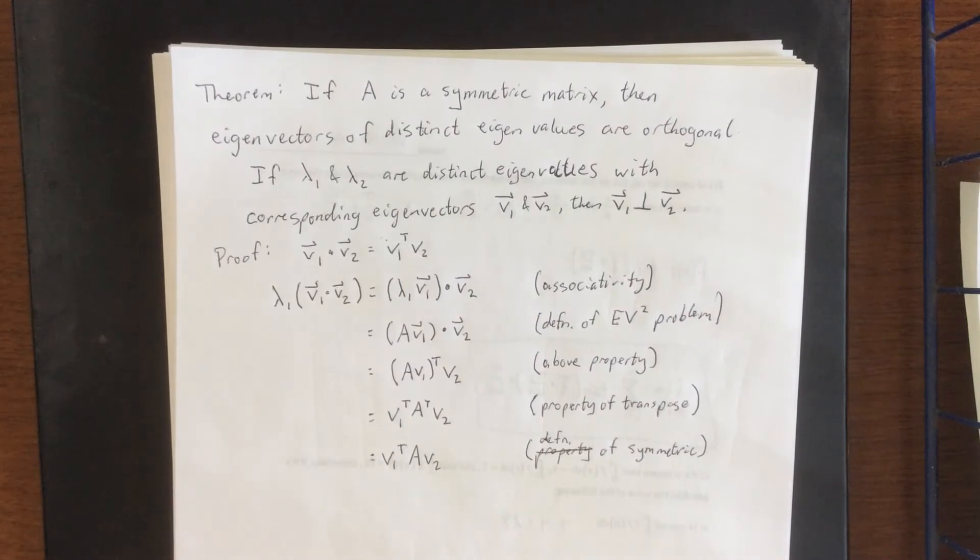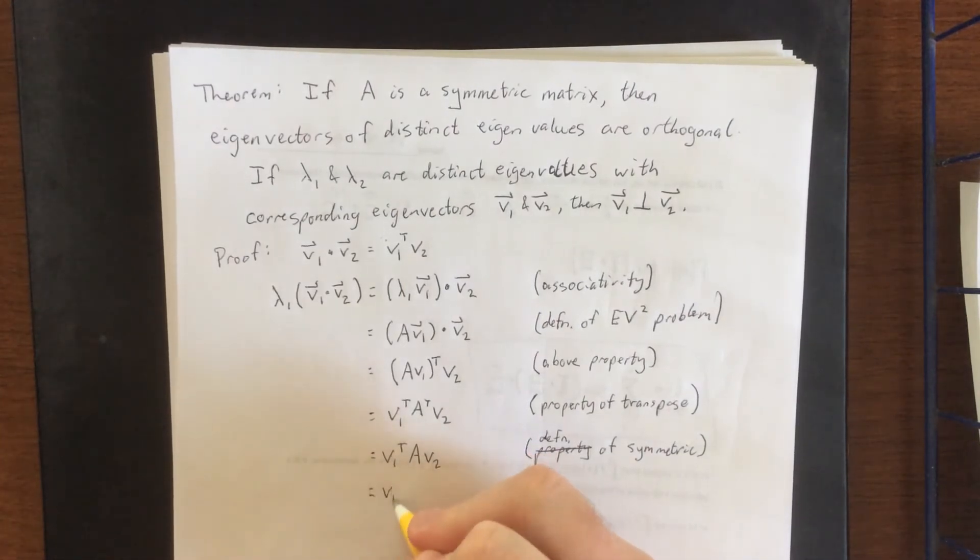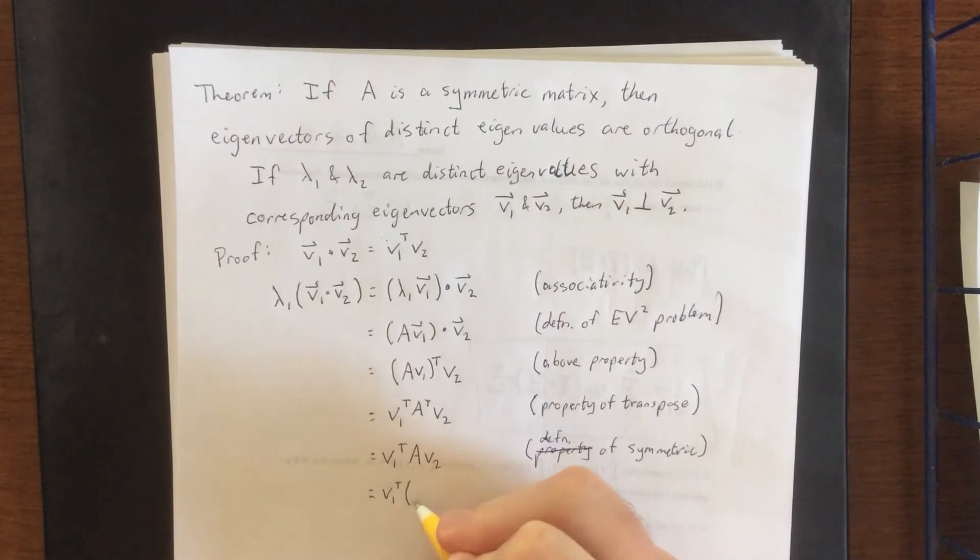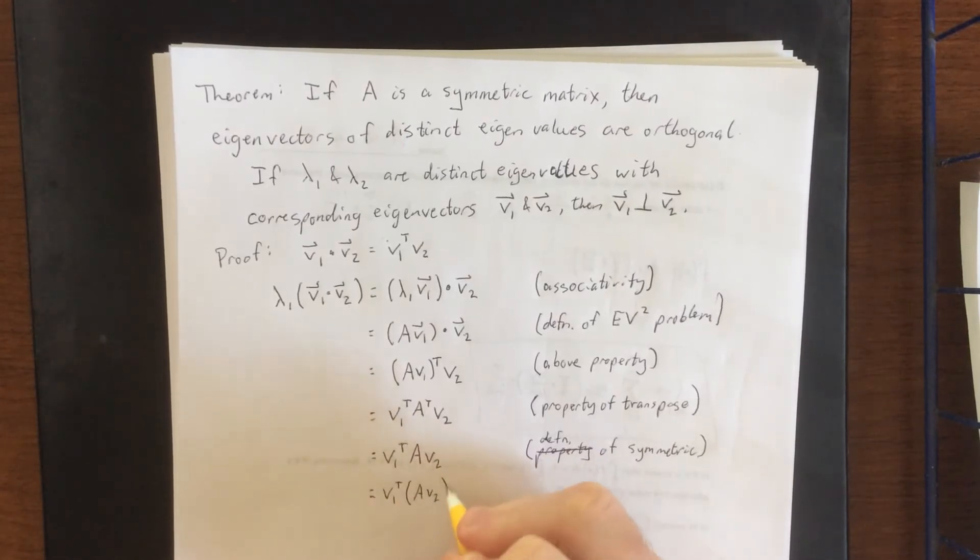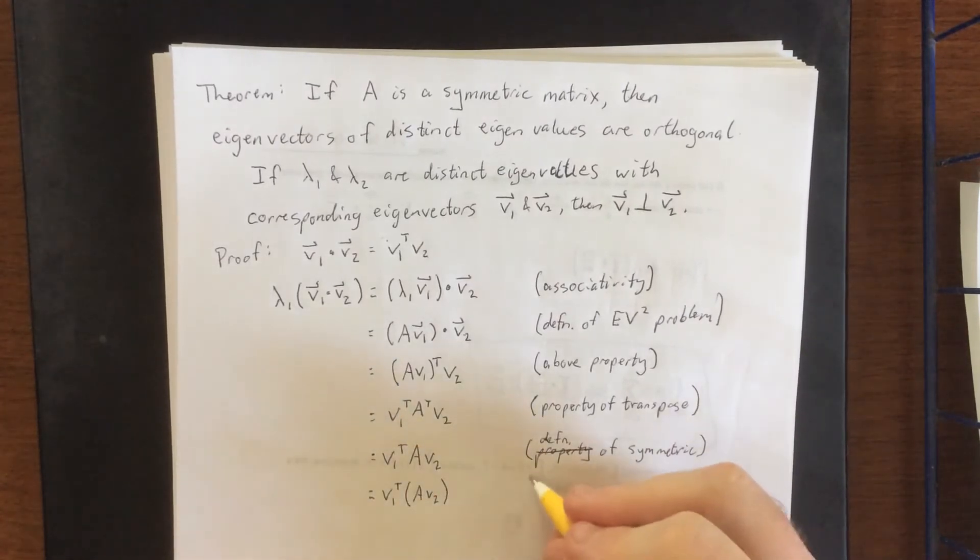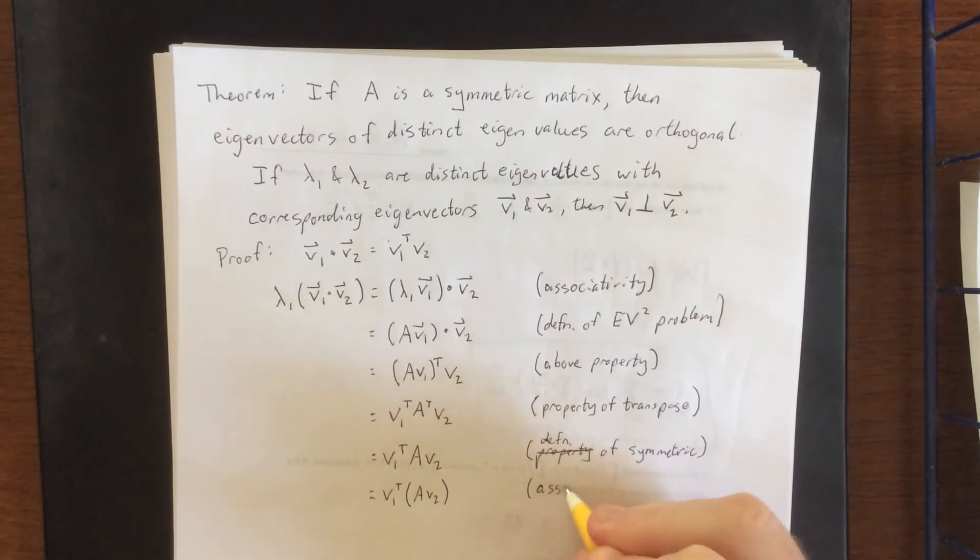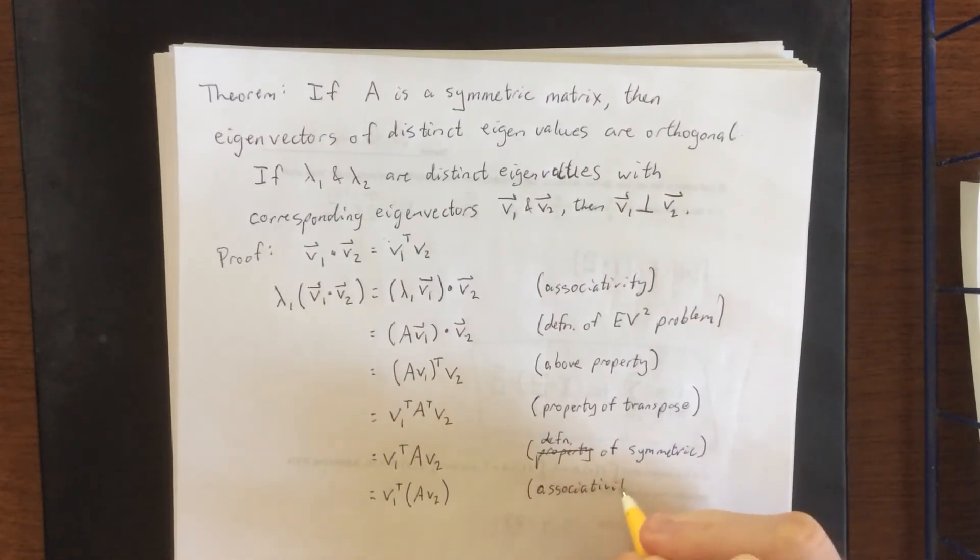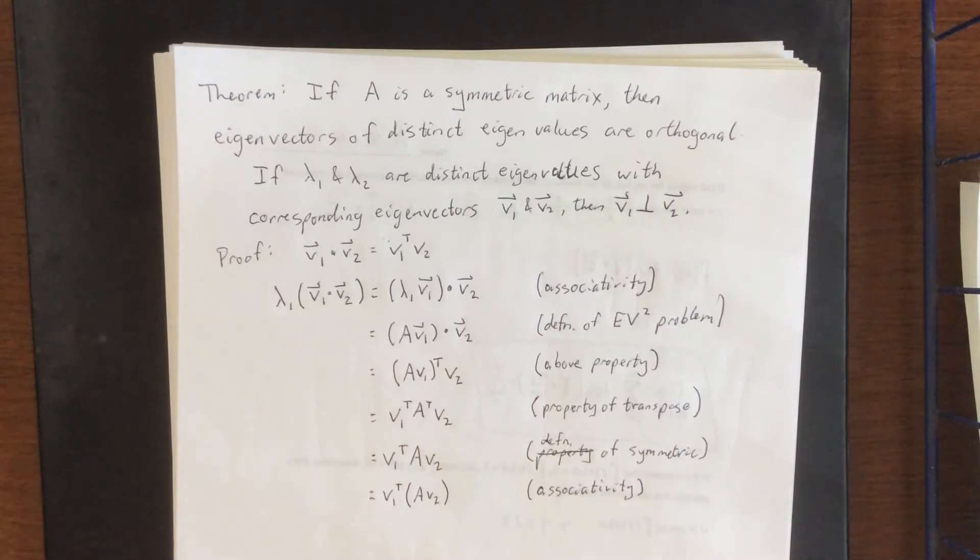Next we'll use the associativity of matrix multiplication to say that this is V1 transpose times A times V2. That's associativity of matrix multiplication.